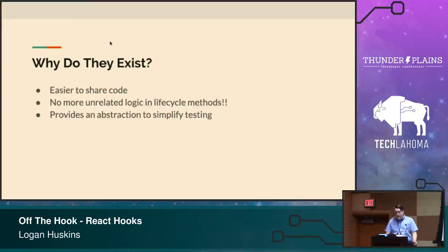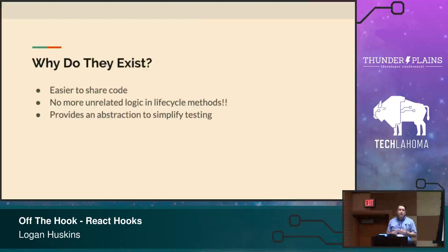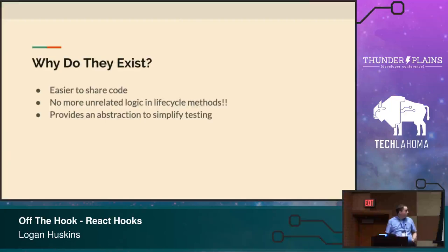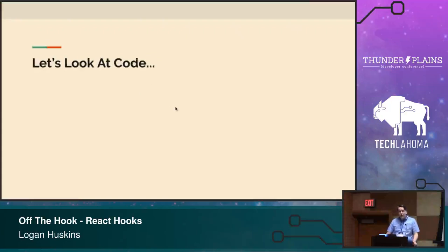So why do React hooks exist? React hooks exist because they make our code easier to share around our application and with others. We no longer have unrelated logic in lifecycle methods. If you have used React, I am sure you have seen componentDidMount doing 15 different unrelated things, and componentWillUnmount doing a bunch of unrelated things — those things are related to each other but not really near each other. React hooks kind of helps us get out of that pattern. They also provide an abstraction that helps us simplify testing.